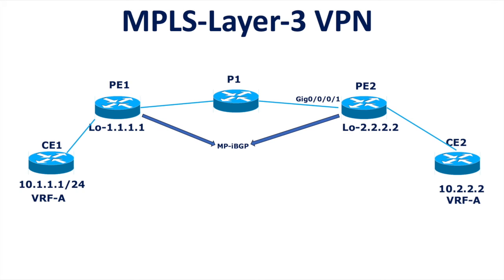Instead of creating your MPBGP session between PE1 and PE2 loopback IPs, if I configure PE1's loopback interface IP as the source BGP neighbor and the remote BGP neighbor as PE2's GigabitEthernet 0/0/1 interface IP, the MPBGP session will definitely come up. Whether your end-to-end ping between CE1 and CE2 within VRF-A will work or not — think about it and put your answers in the comments. I will give the answer in the next video.